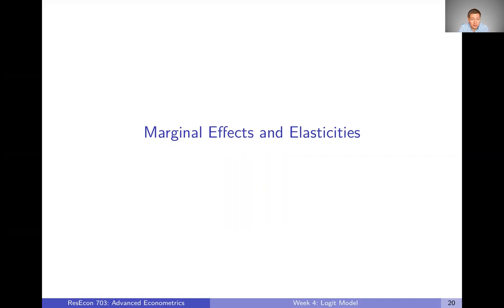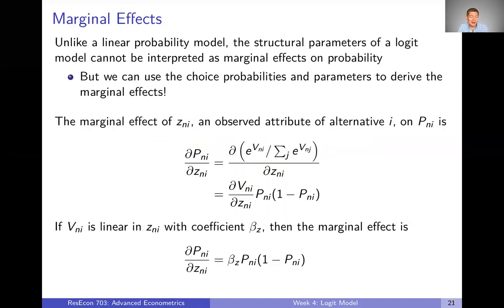We're going to talk about some of the properties of the Logit Model, starting with how we can use our estimated parameters and choice probabilities to get marginal effects and elasticities. A lot of times when we estimate a discrete choice model, we want to think about counterfactuals or understand how a change in the data affects people's choices — how it shuffles people around and makes them substitute between alternatives. We can represent those substitutions by looking at marginal effects and elasticities.